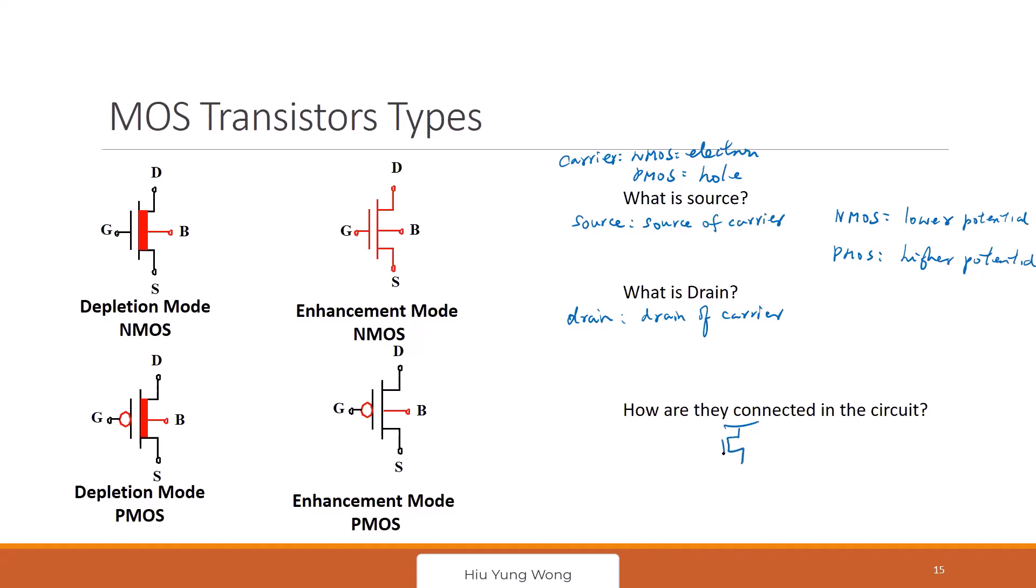So what do I mean? If I connect an inverter like this. Based on the symbol, of course, I know this is PMOS. This is NMOS. Because of the definition, this is the source of the NMOS. This is the drain of the NMOS. Because it's at higher potential. Similarly, this is also the drain of the PMOS. Because it's at lower potential. And this is the source of the PMOS.